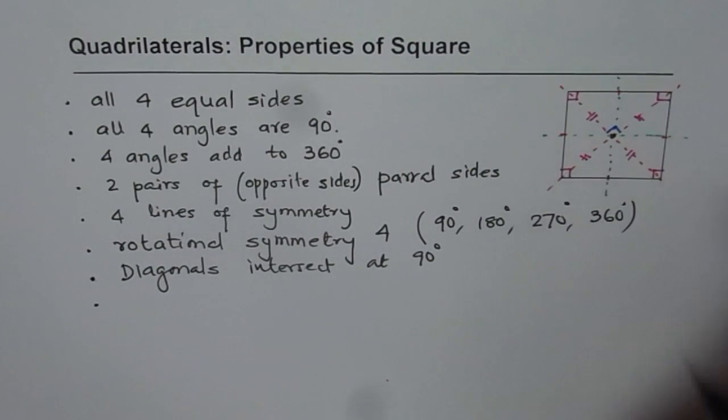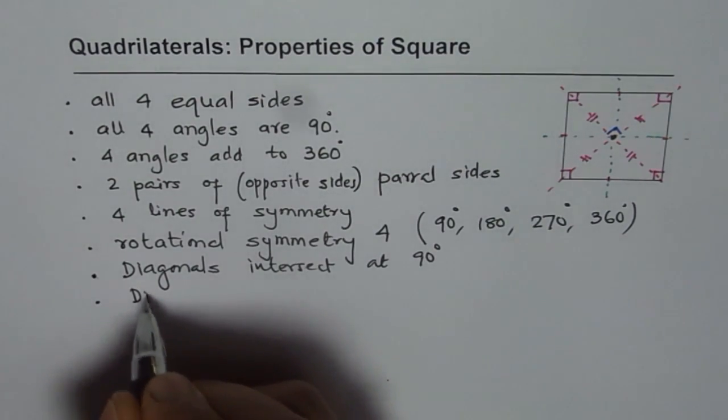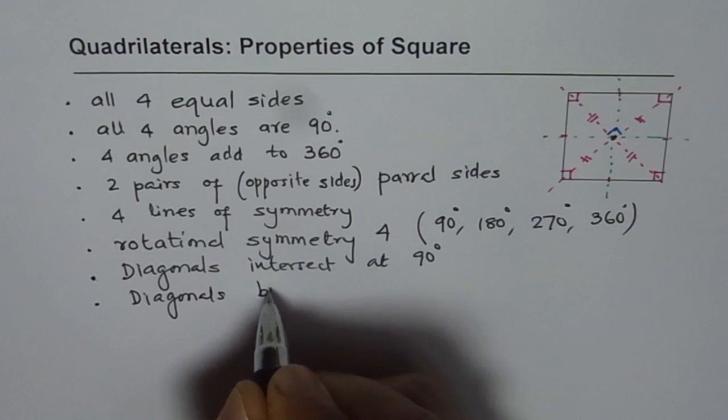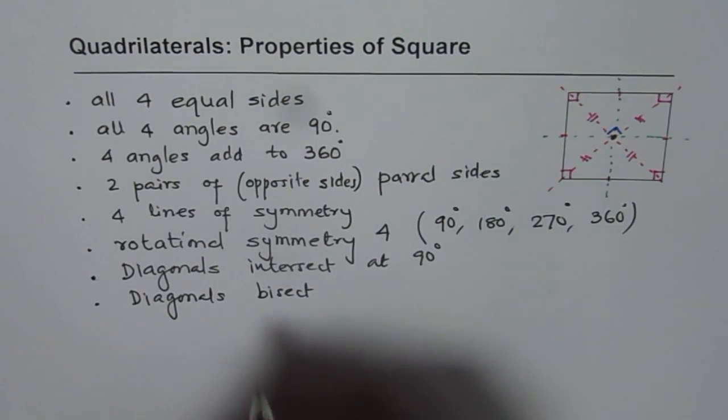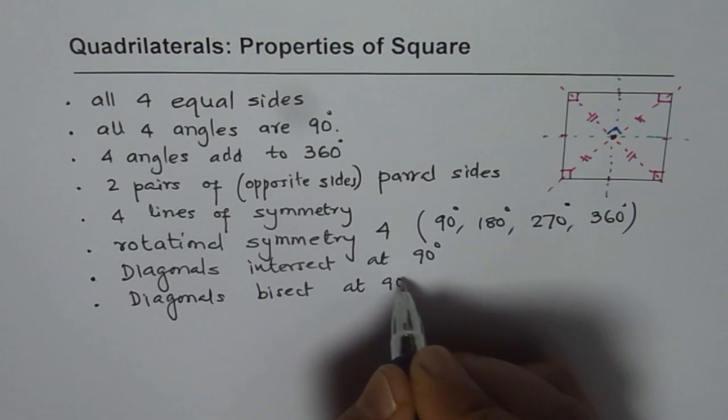Check it out. They are equal. So, diagonals bisect. We can combine these two and then write diagonals bisect at 90 degrees.